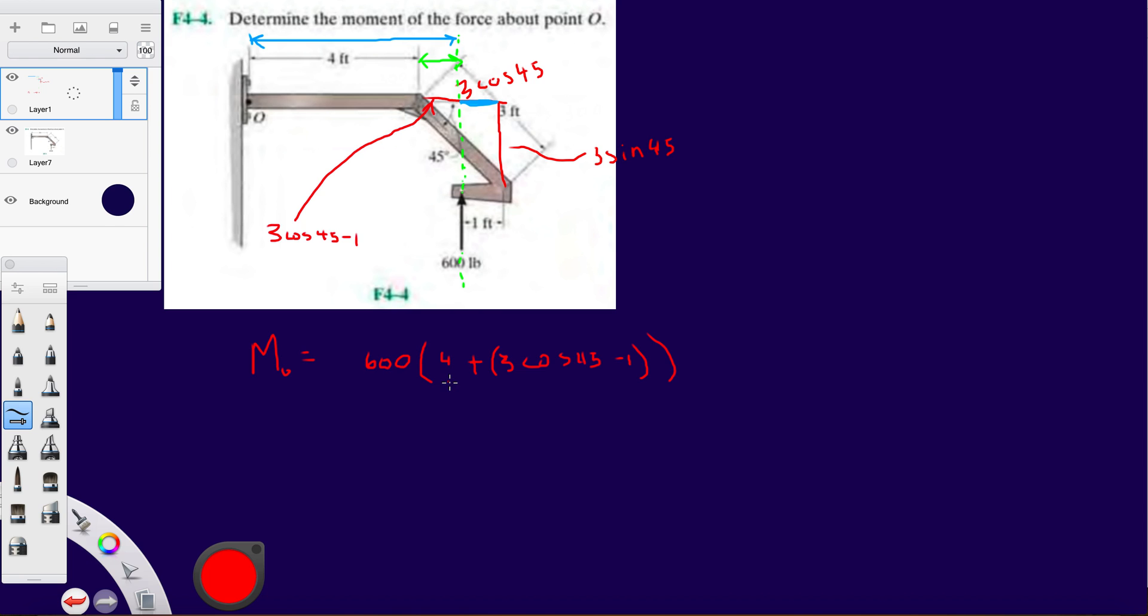And that's pretty much it for this problem. Now let's just determine the direction. So we know - line up your fingers, your index finger, hold all your fingers in your right hand along the direction of the 600, and then let them fall towards O.